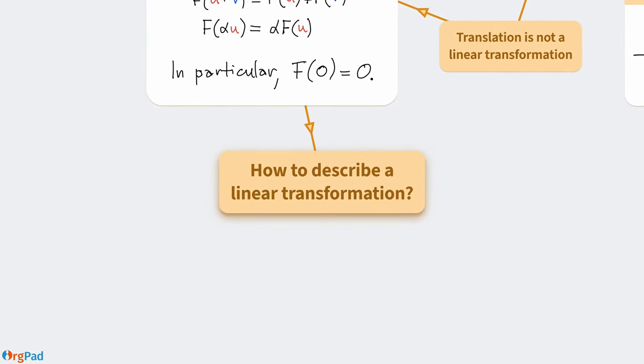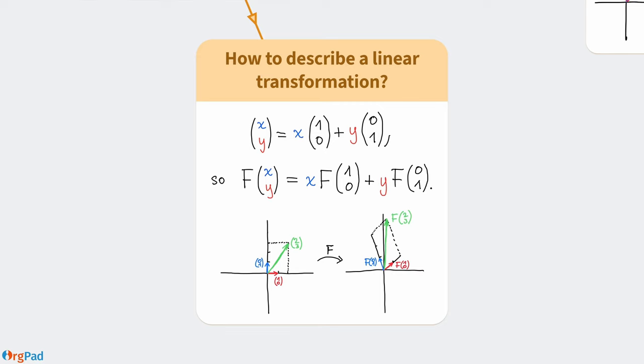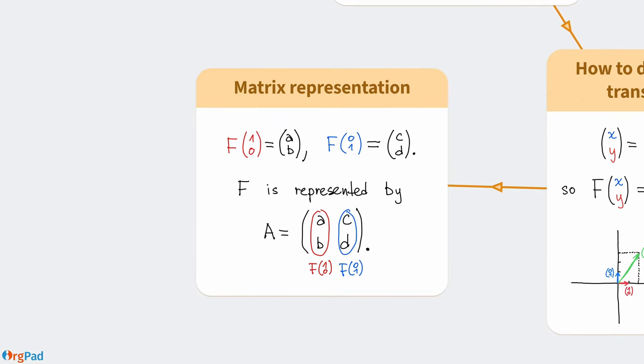Suppose that we have some linear transformation f. What is the least amount of information we need to know to fully describe it? It turns out that not that much is needed. Notice that any vector can be expressed as the sum of x times (1,0) with y times (0,1). By linearity, it follows that the image of (x,y) is fully determined by the images of (1,0) and (0,1). We know that the image of (1,0) is some vector (a,b) and the image of (0,1) is some other vector (c,d). In total, f is fully described by four numbers a, b, c, d, which are placed in a 2x2 table. The first column represents the image of (1,0), while the second column represents the image of (0,1). This table is called a matrix.